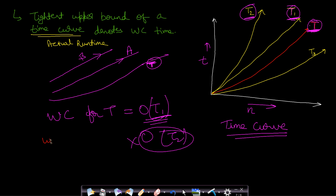The worst-case time always guarantees that your time curve will never exceed t1. This curve can never exceed t1 — if you extrapolate this curve, t will never go over t1. Now let us see some examples in order to understand this better.